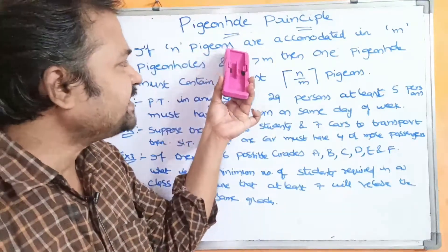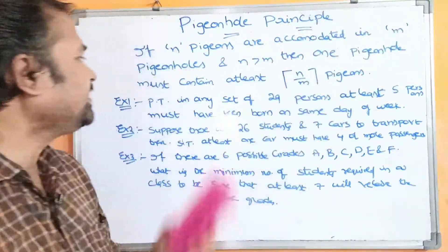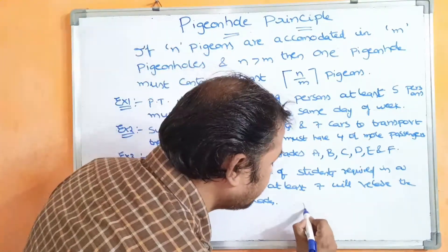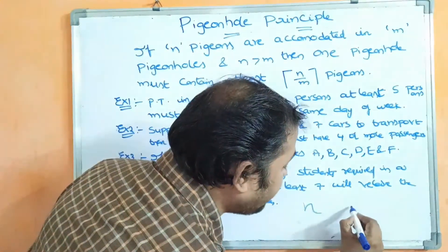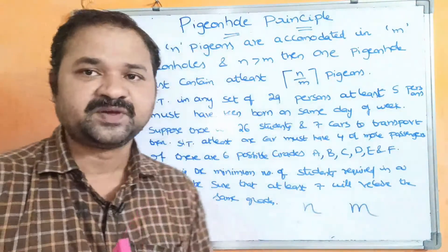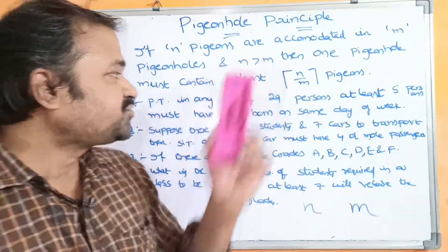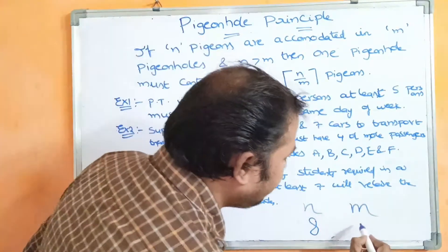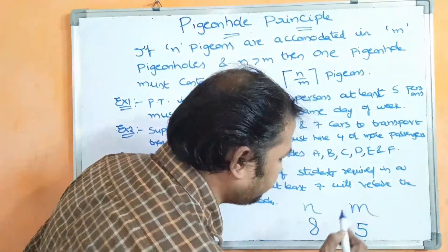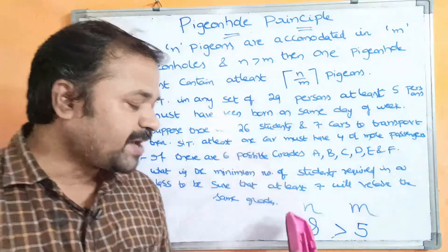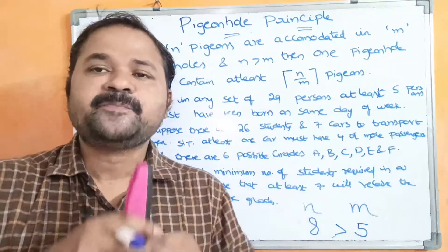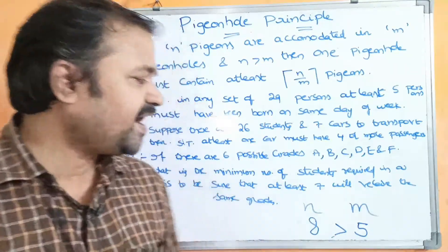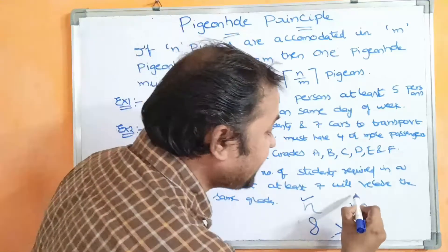If n pigeons are accommodated in m pigeonholes, and n should be greater than m. For example, let the number of pigeons be 8 and the number of pigeonholes be 5. So 8 is greater than 5. The number of pigeons must be greater than the number of pigeonholes. Similarly, let we have n objects and m containers.